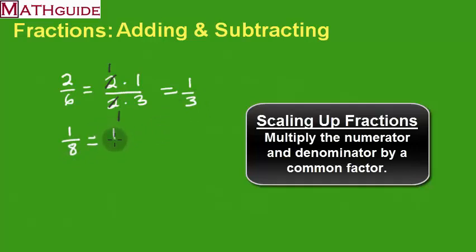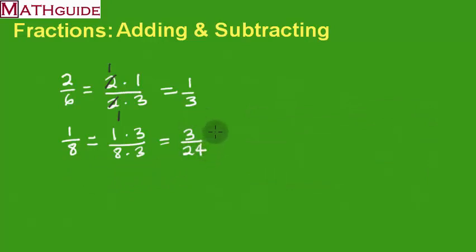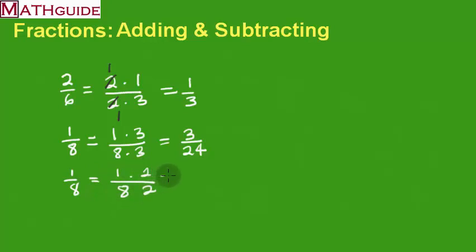Sometimes instead of making numbers smaller, which we call reducing a fraction, sometimes we want to scale the fraction up or make the numbers larger. So let's say I take 1 and multiply it by 3, and I take 8 and multiply it by 3. Notice I'm doing the same number top and bottom — just like we divided the same number top and bottom when we reduce, you have to multiply top and bottom by the same value. So I'm going to get 3 twenty-fourths. These two fractions are the same value, except these numbers are just larger. I could also take 1 eighth and multiply the top and bottom by 2 to get 2 sixteenths, which is the same thing as 1 eighth. Sometimes it's to our advantage to scale fractions up, as you'll see in a moment.